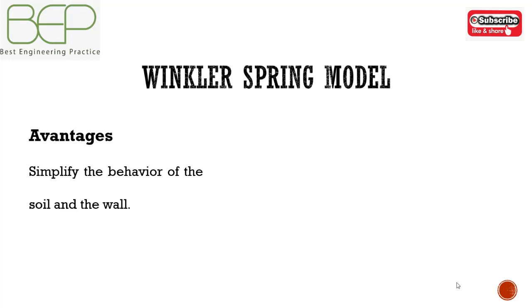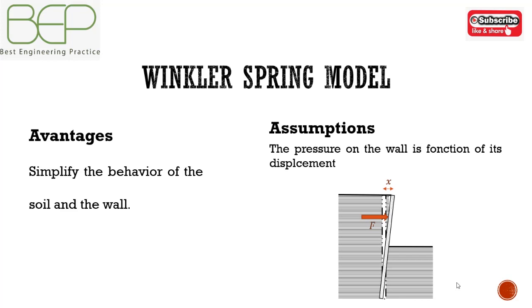The Winkler spring model assumes that the pressure on the retaining wall is a function of horizontal displacement towards or away from the ground, up to the point of failure conditions, at which the wall is modeled as a beam using either a finite difference or finite element approximation.